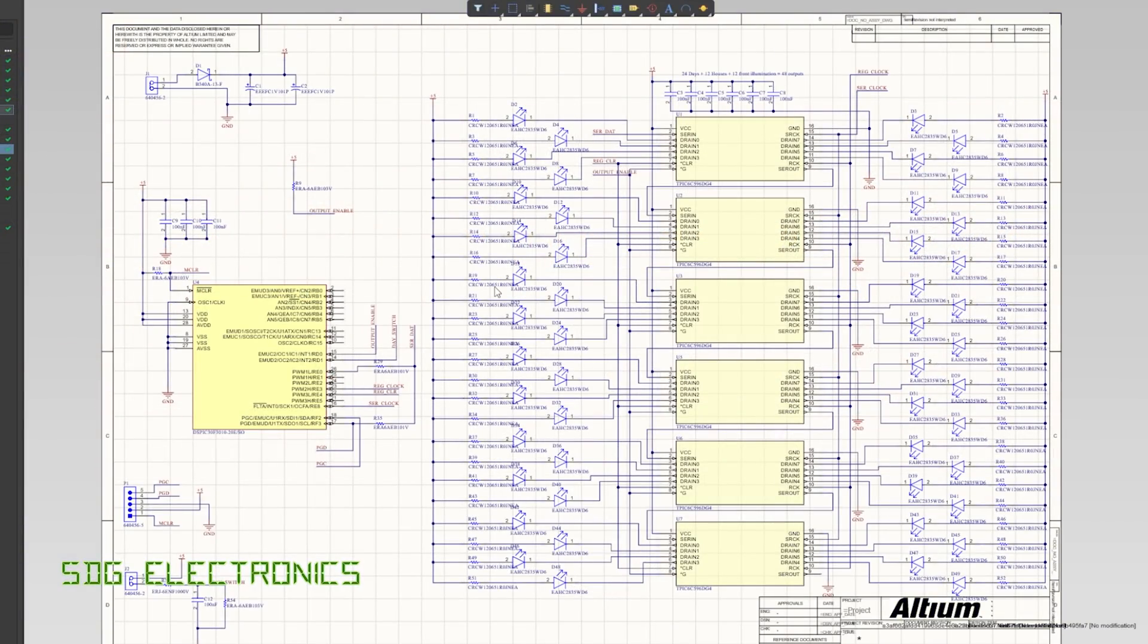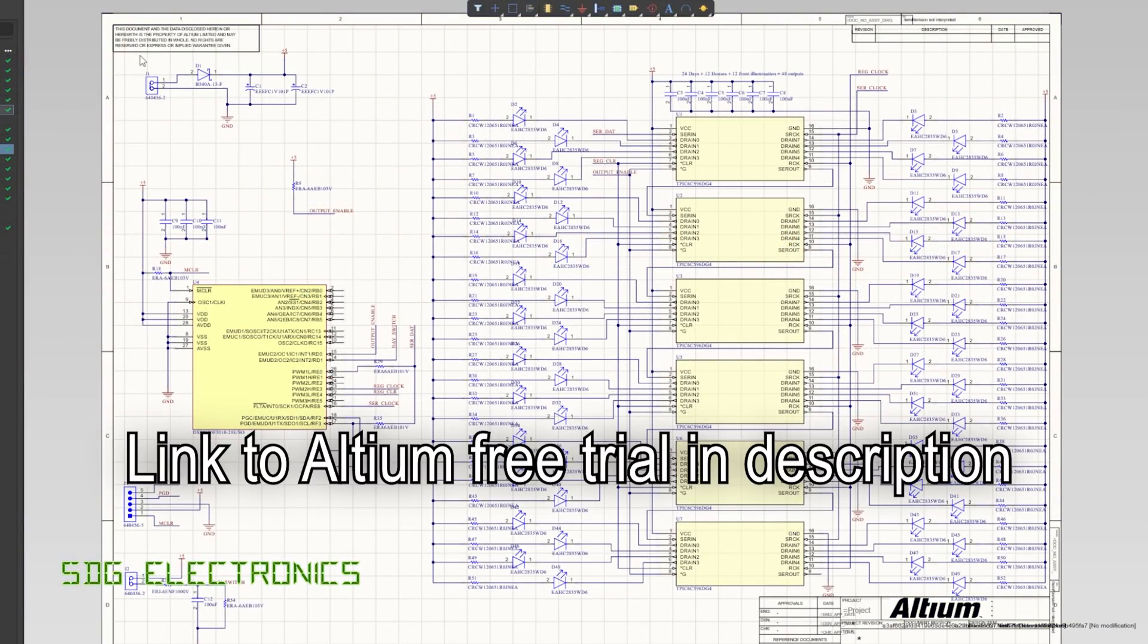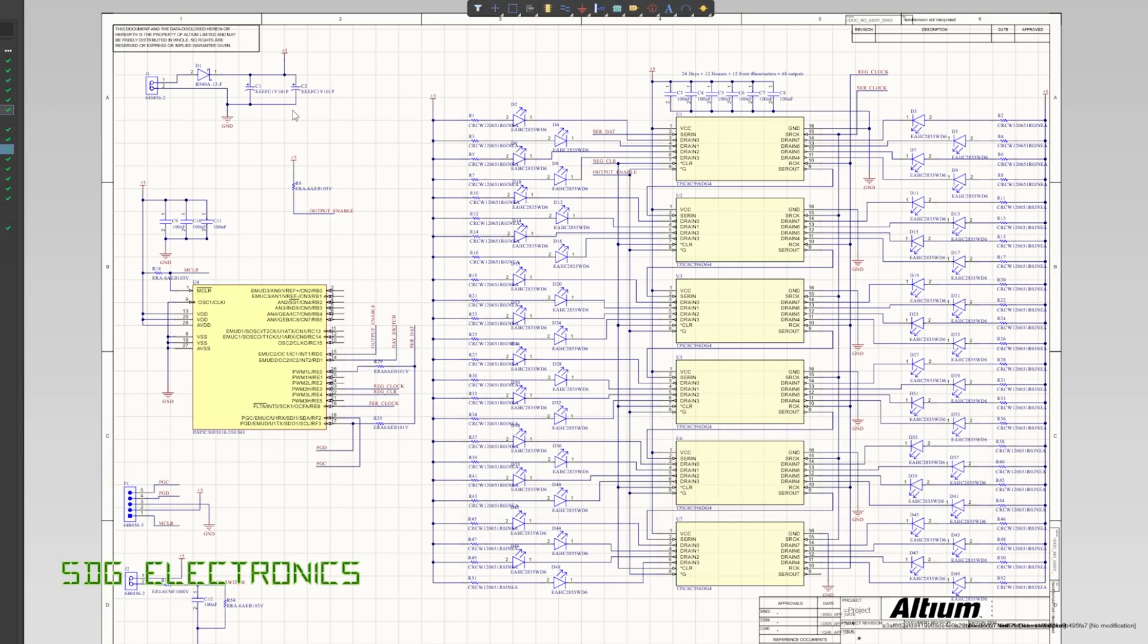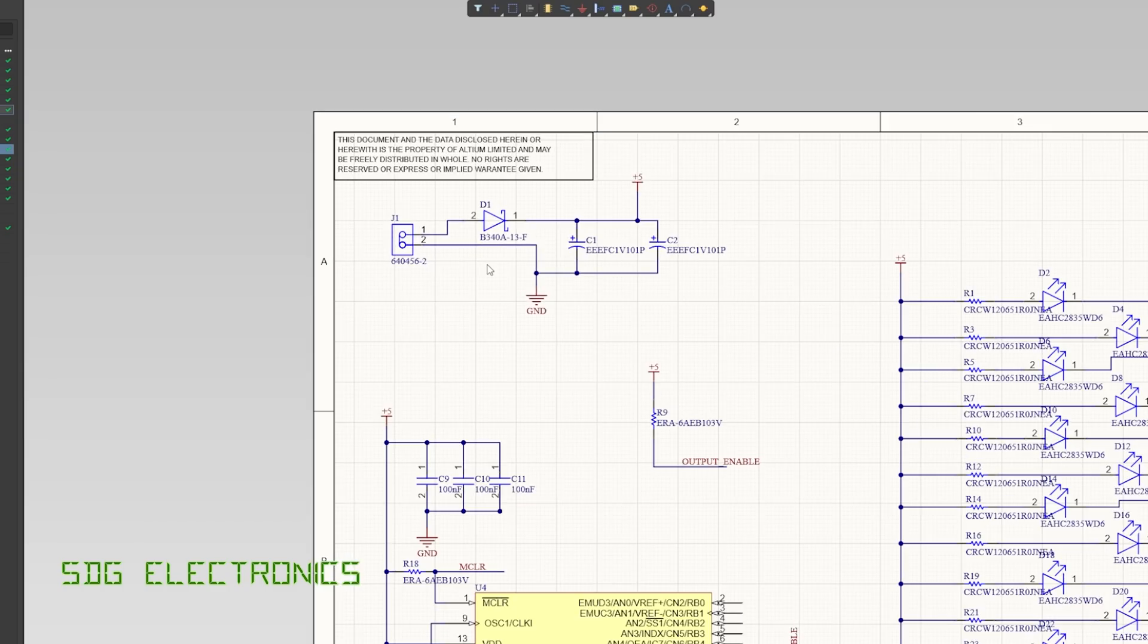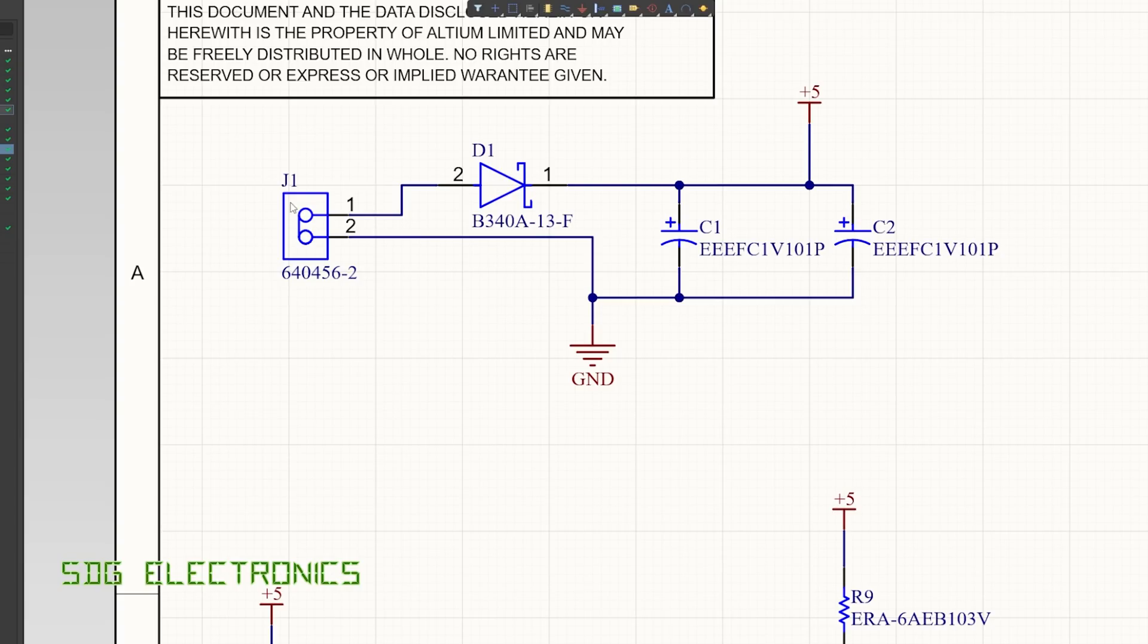Let's take a look at the design in Altium. This is designed to be very straightforward. A lot of the design decisions here are based on trying to make things simple. Power coming in 5 volts direct from a USB power supply through a Schottky diode for reverse polarity protection and then into a pair of large electrolytic capacitors.